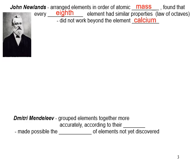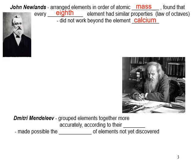Dmitri Mendeleev was another scientist who grouped elements together more accurately according to their properties given that alkali metals went with alkali metals, halogens went with halogens and so on. This made possible the prediction of elements that were not yet discovered. There were a few element holes in the periodic table that weren't discovered till much later due to this grouping by similar properties.